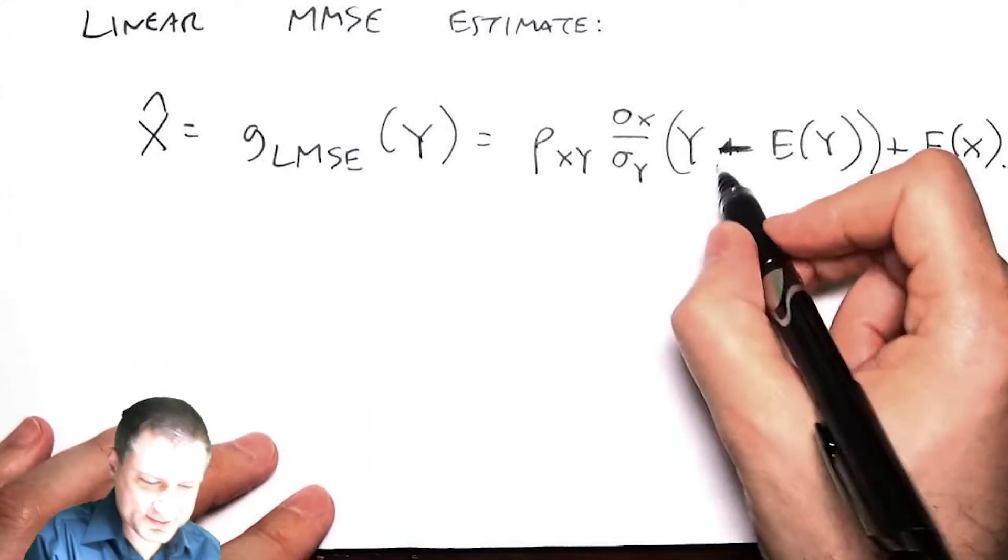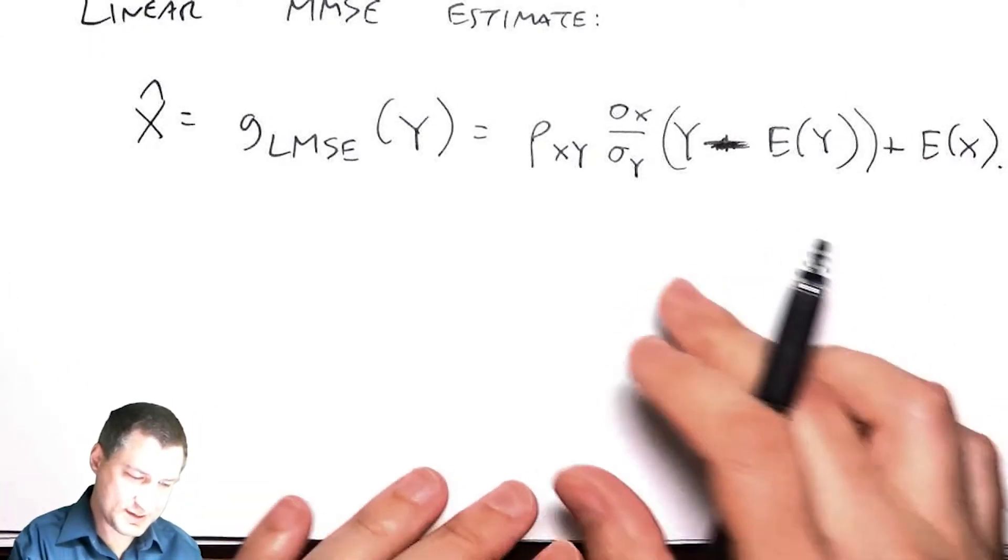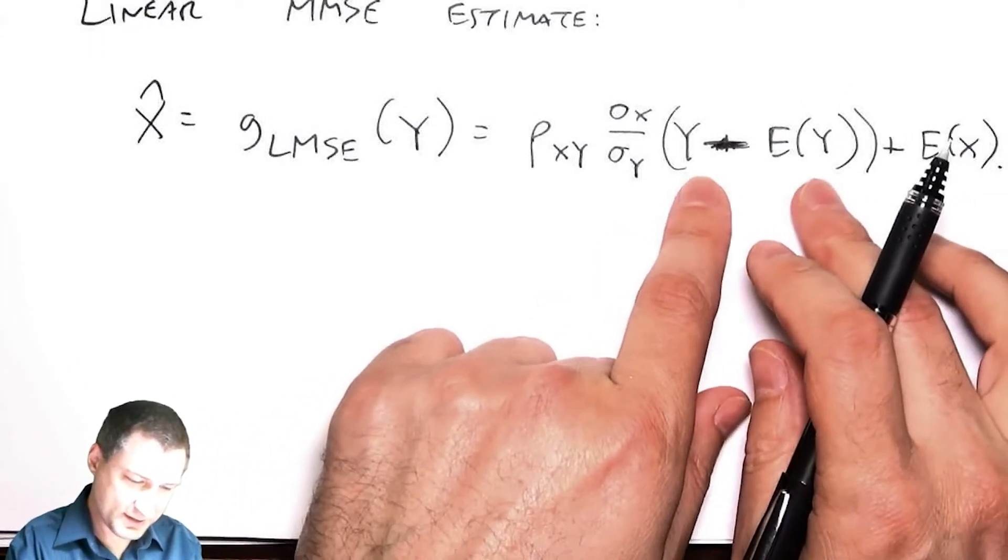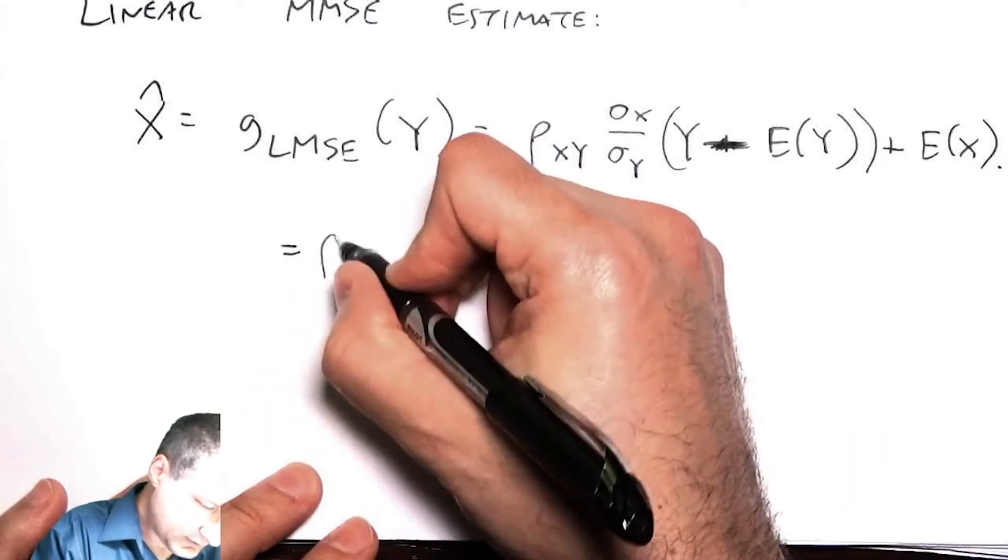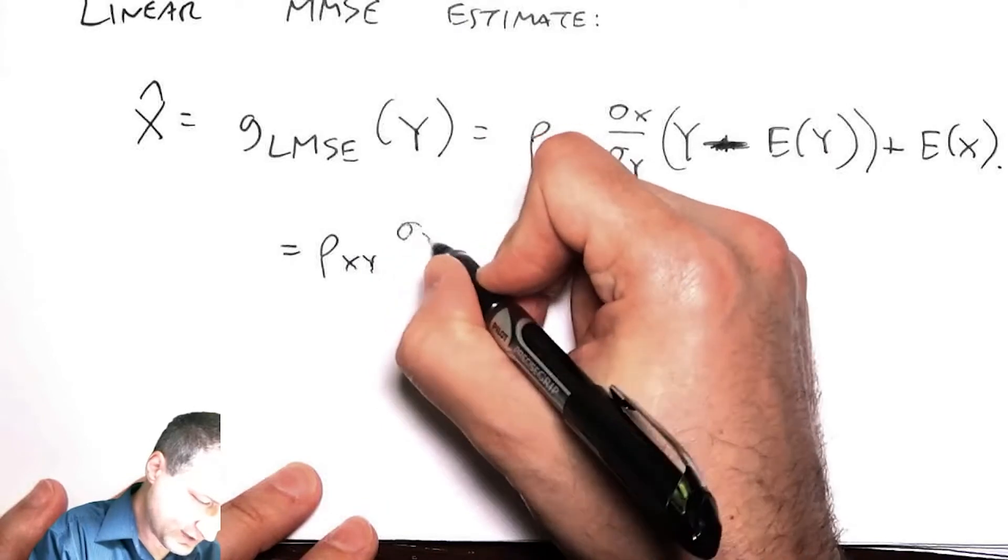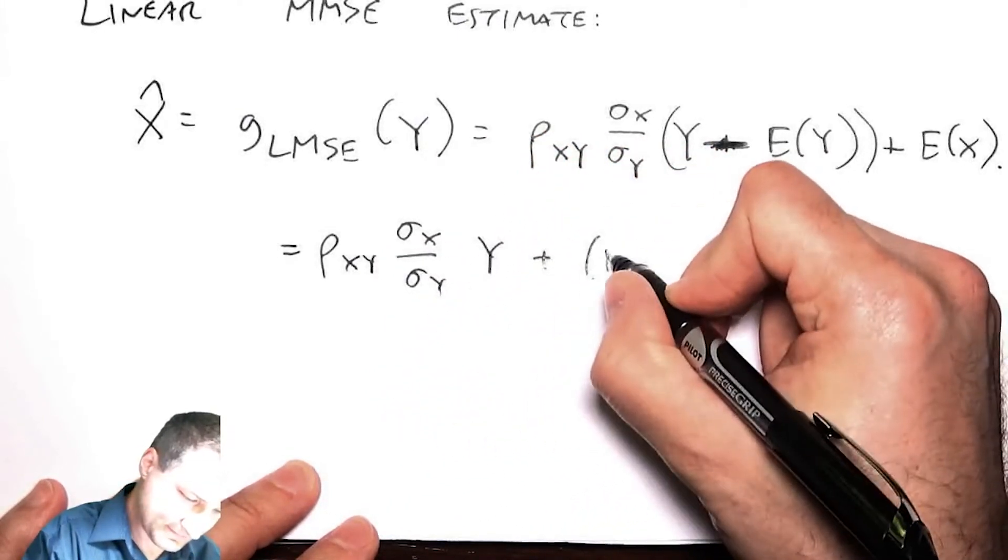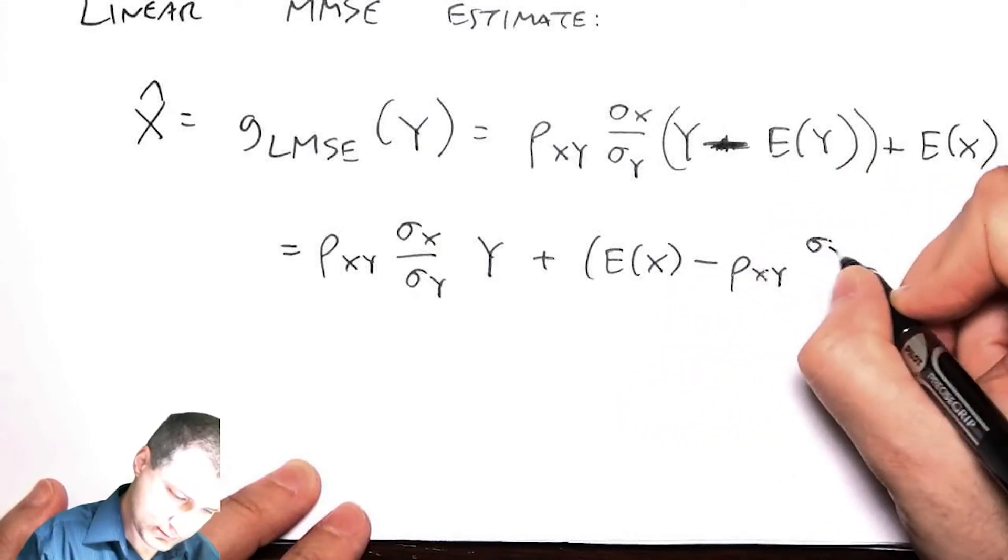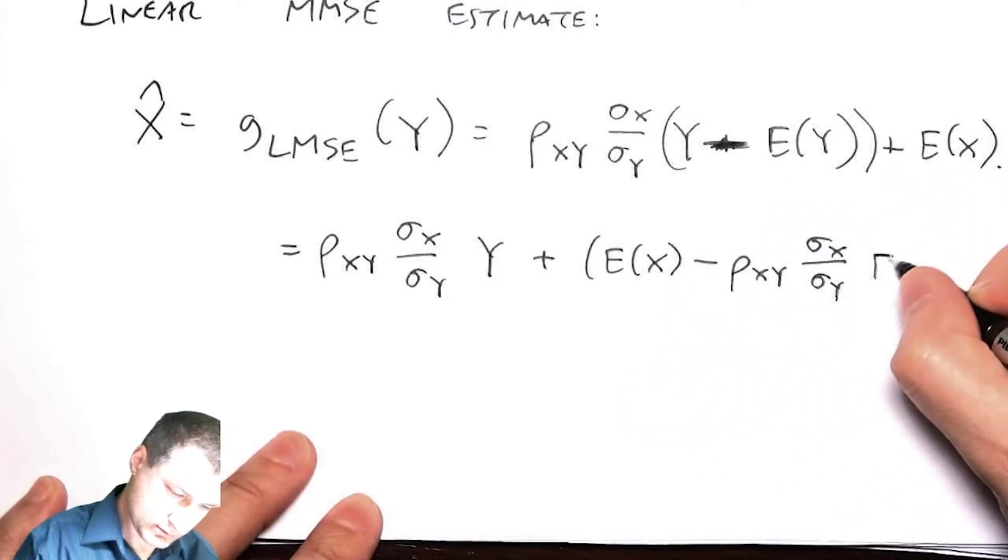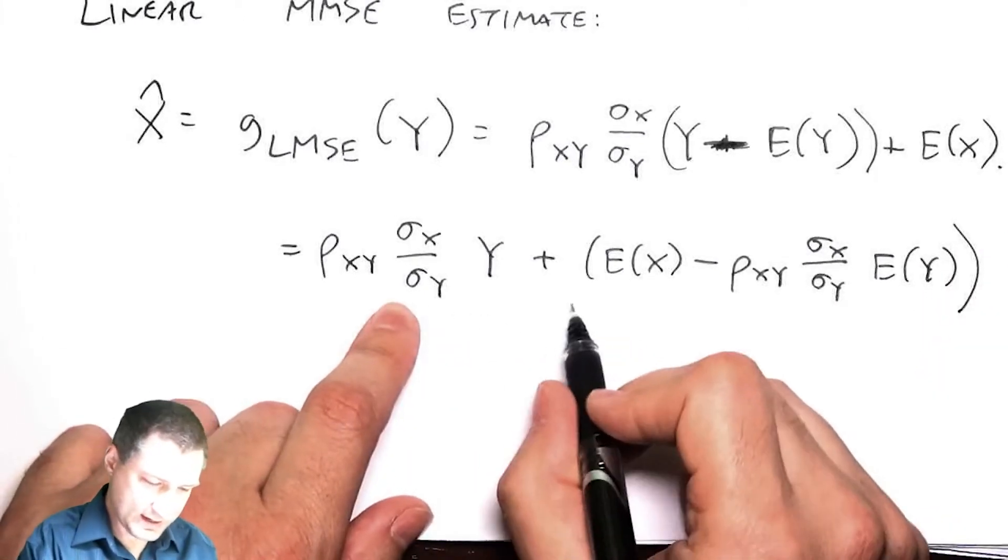You can convince yourself that this is the same as what I wrote before. I just put this part inside the parentheses. And this is just a slightly different way of saying it, which I guess is actually the way that I should have written it down in the first place. This is the a and this is the b.